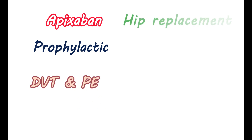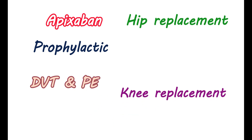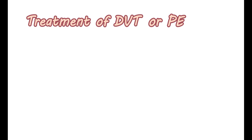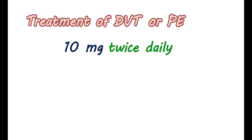Apixaban can also be given as a prophylactic in deep vein thrombosis and pulmonary embolism. After hip or knee replacement surgery, apixaban can be given to reduce clotting. In the case of hip replacement, it can be given at 2.5 mg orally twice daily for 35 days; in the case of knee replacement, up to 12 days. For treatment of DVT or pulmonary embolism, apixaban is given at 10 mg twice daily for 7 days, after which the dose may be reduced to 5 mg twice daily.